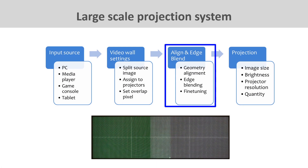The third subsystem is alignment and edge blend. Due to various on-site installation factors such as screen size, throw distance, or projecting onto an irregular surface, the geometry of projector images needs to be adjusted before edge blending. Sometimes you might also need functions like edge mask or shift to get rid of redundant content.